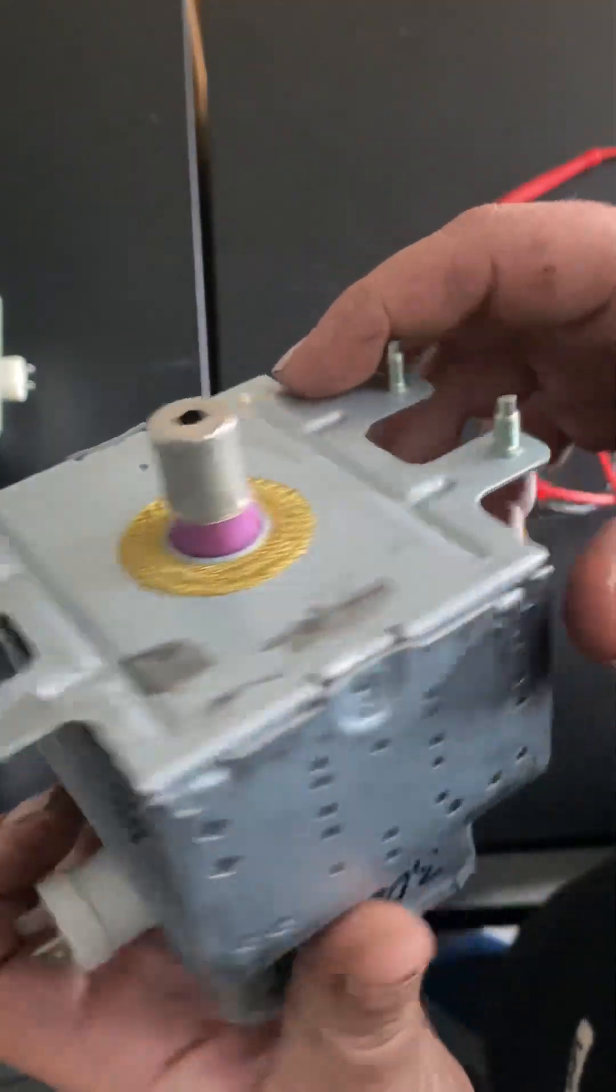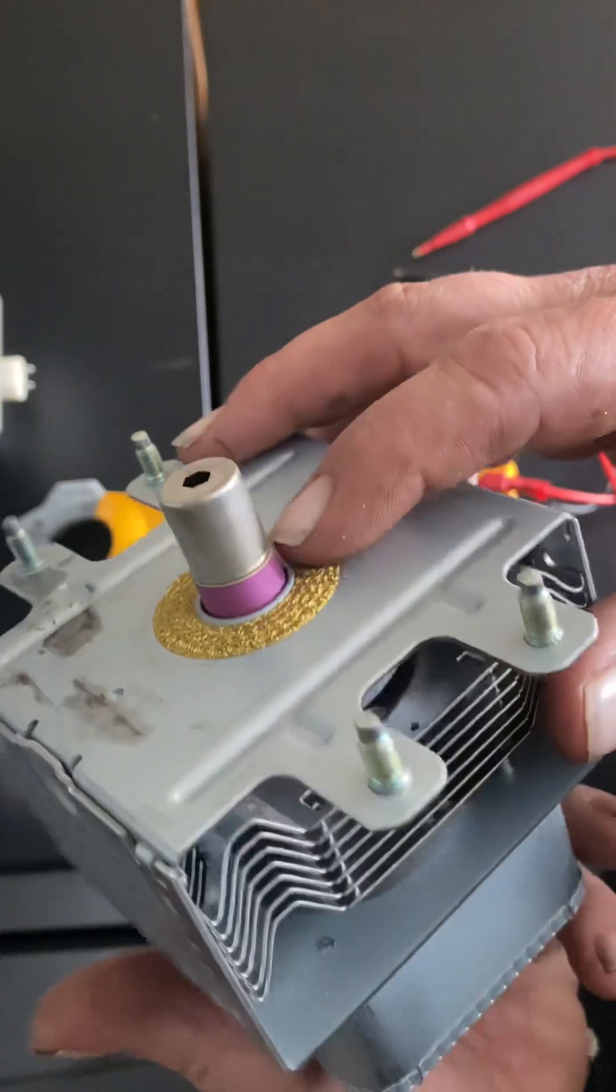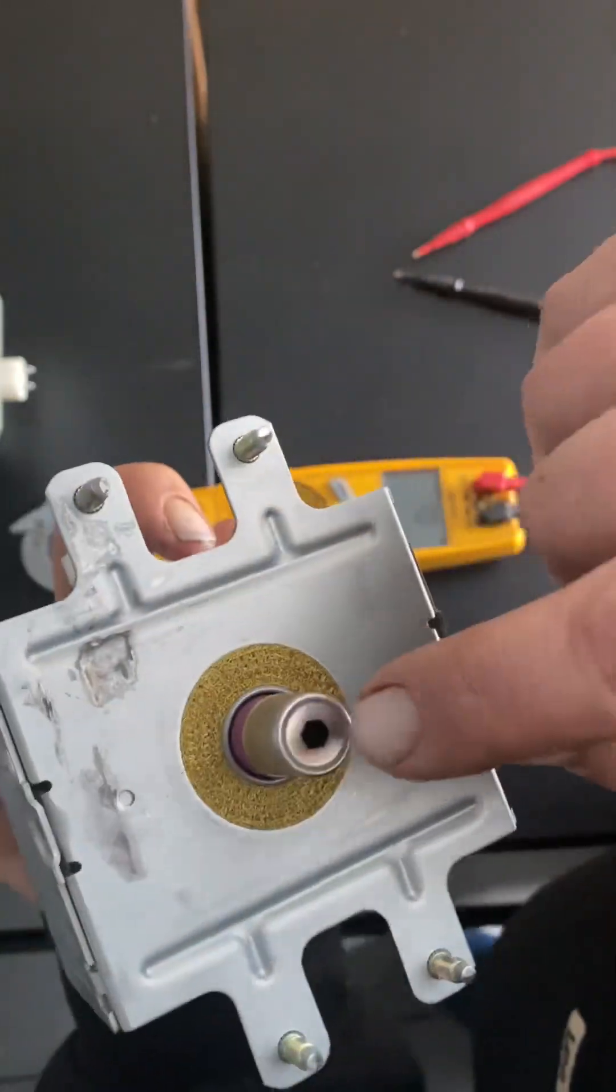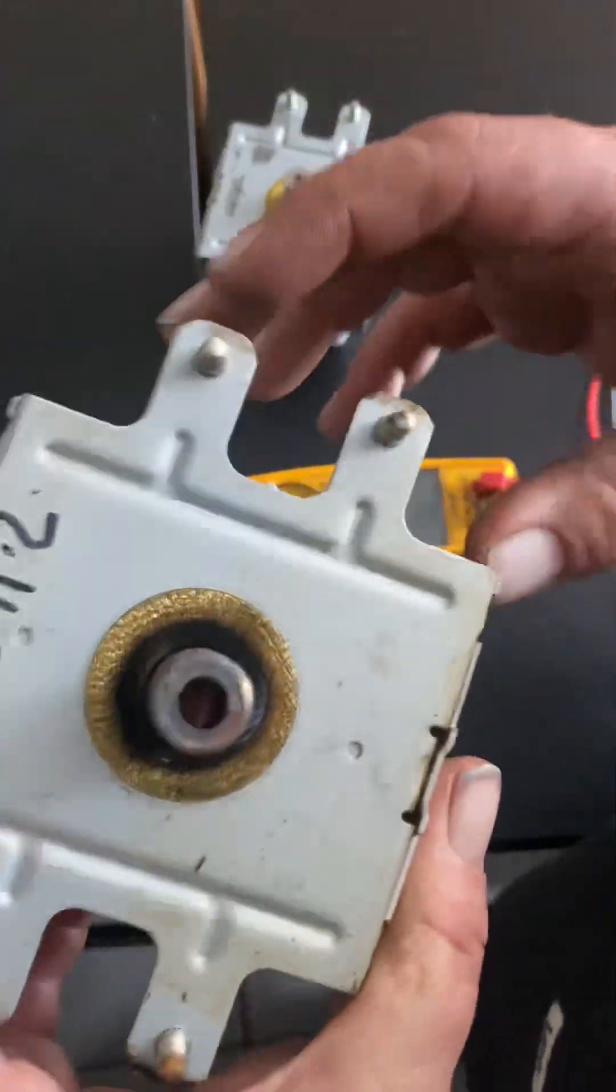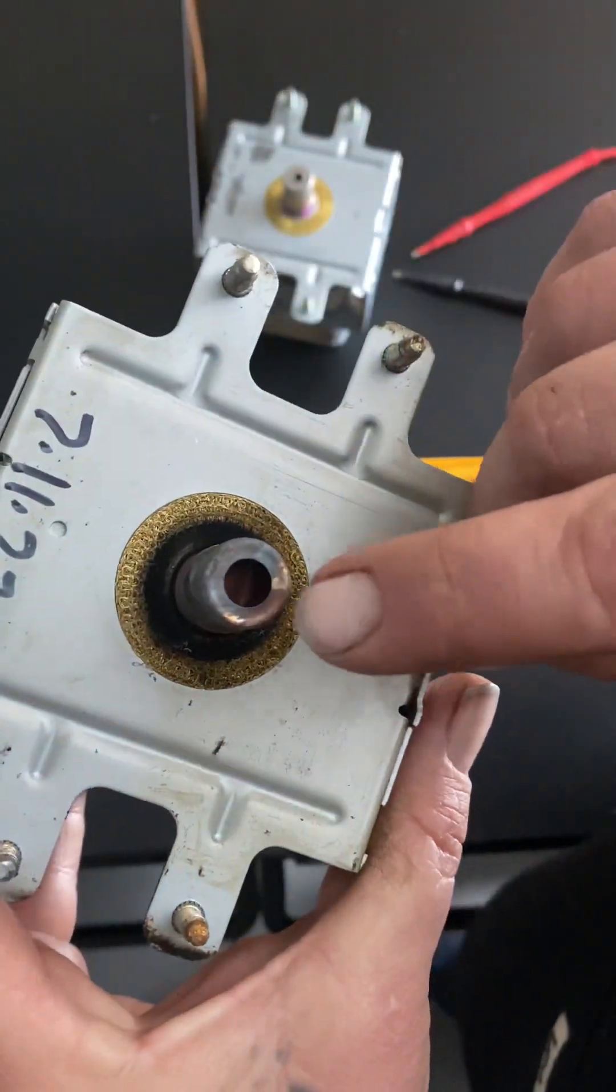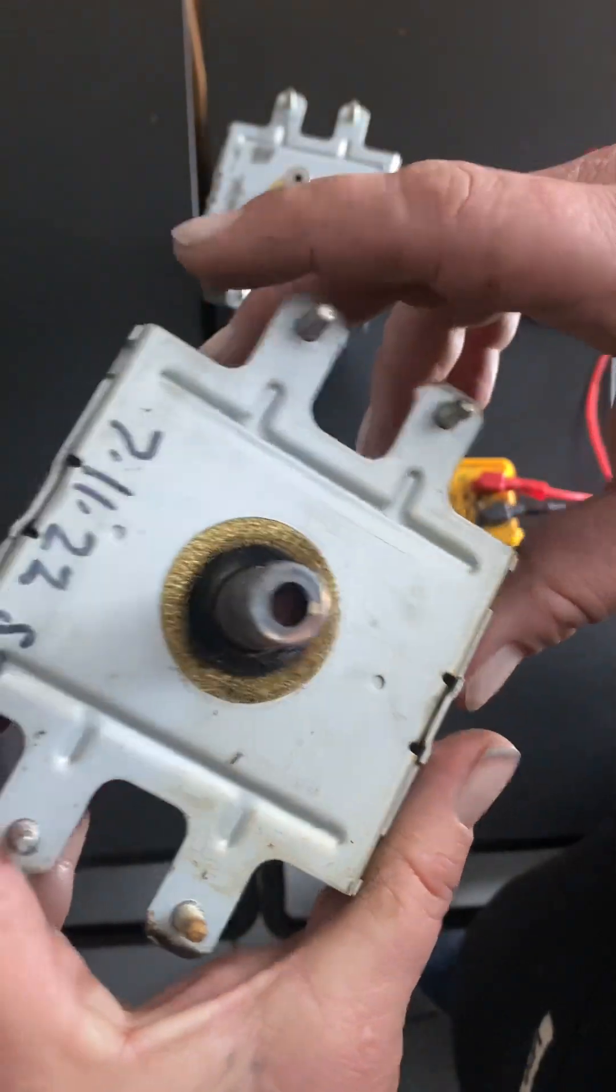Any kind of damage that you see, discoloration, anything, that's what you're looking for. And you're trying to look at the antenna itself. It's hard to see on this one, but you can see the antenna looks pretty bad.